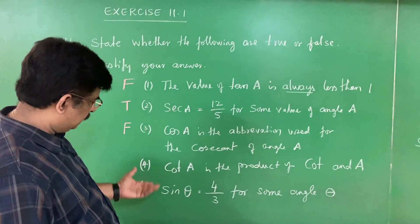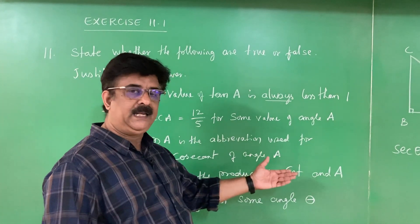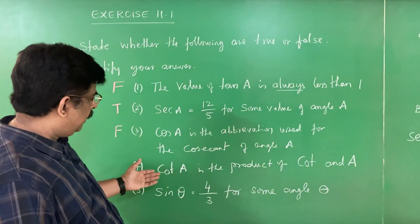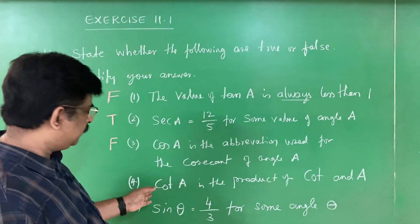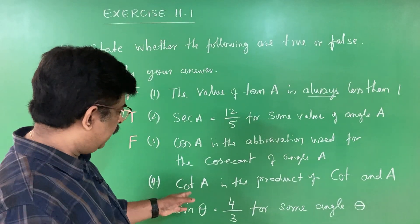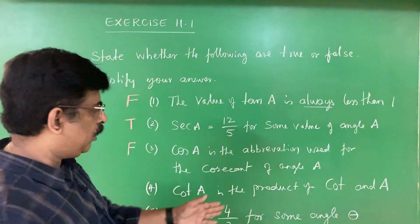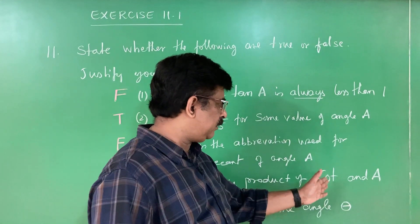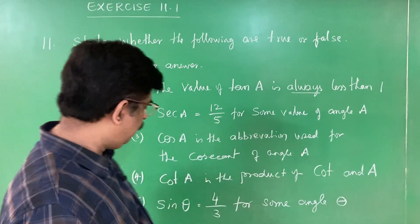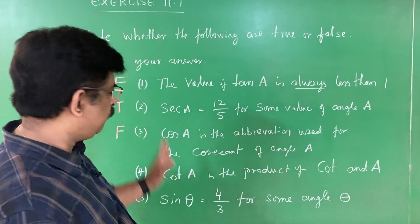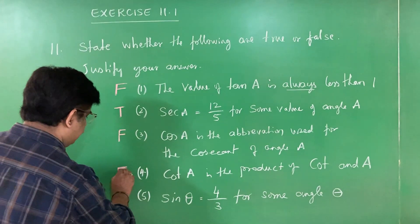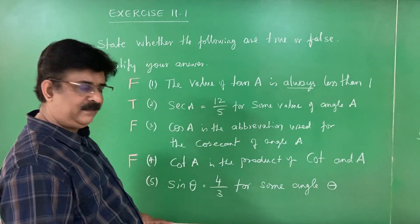Fourth statement: cot A is the product of cot and A. This is meaningless — cot A itself is a ratio. It is just like a man without a head if you separate A from cot A. Cot A is a single unit; it is not the product of cot and A. Therefore this statement is FALSE.